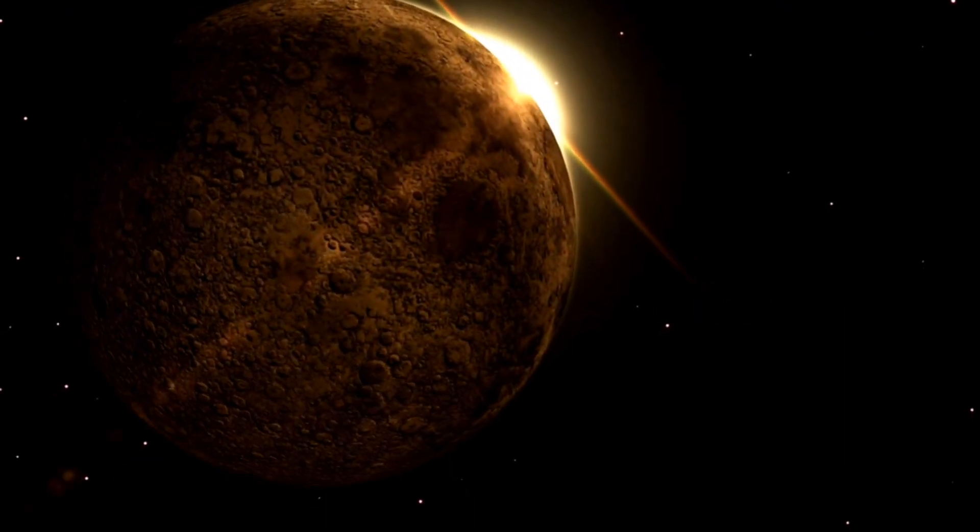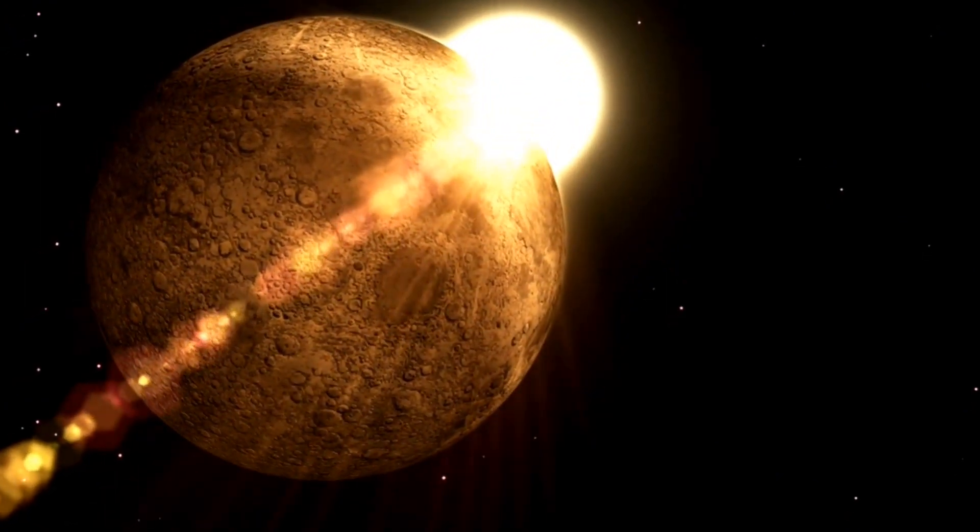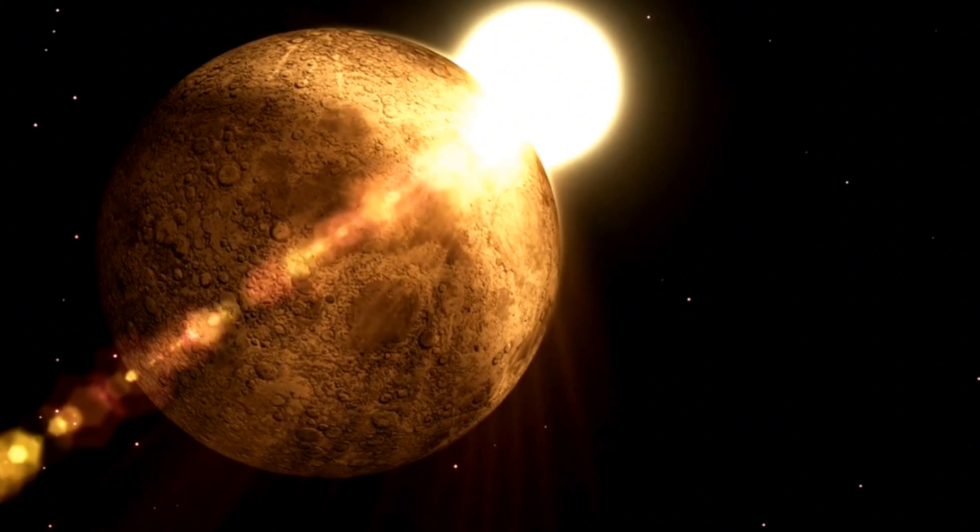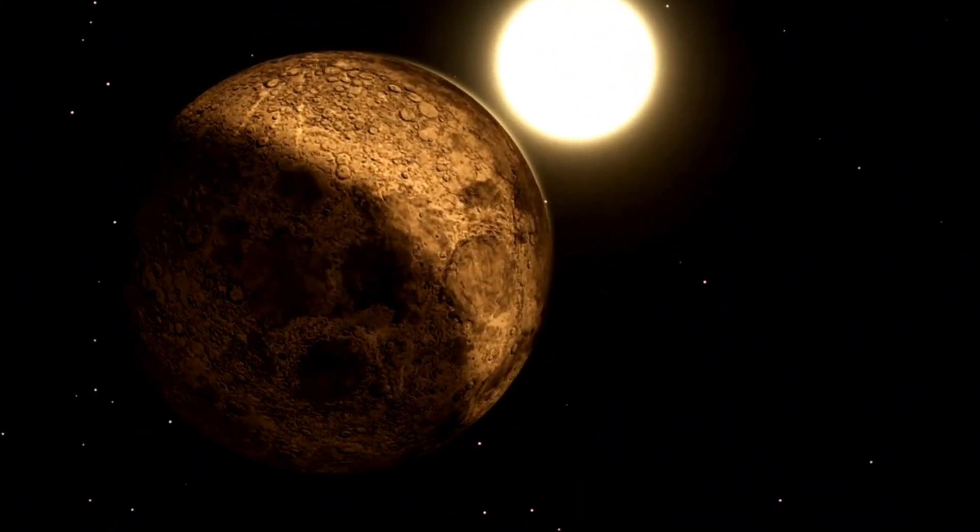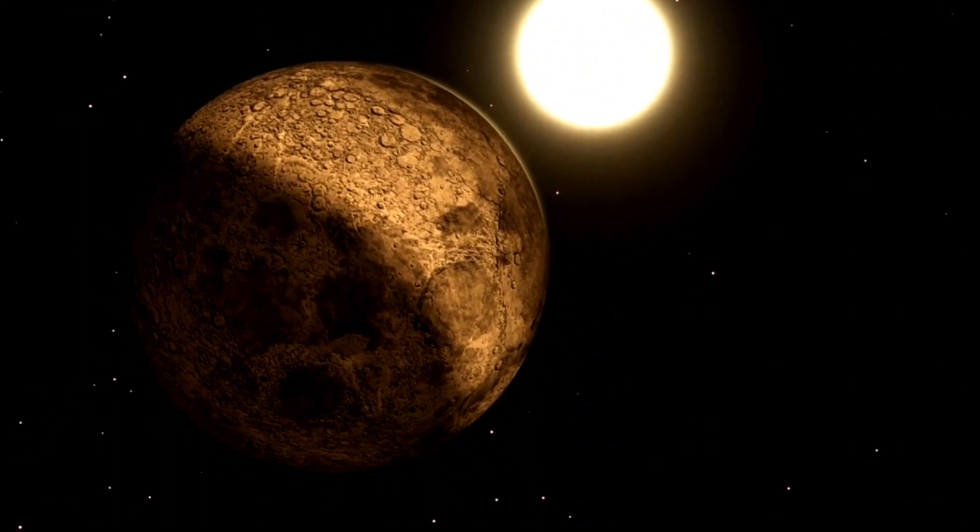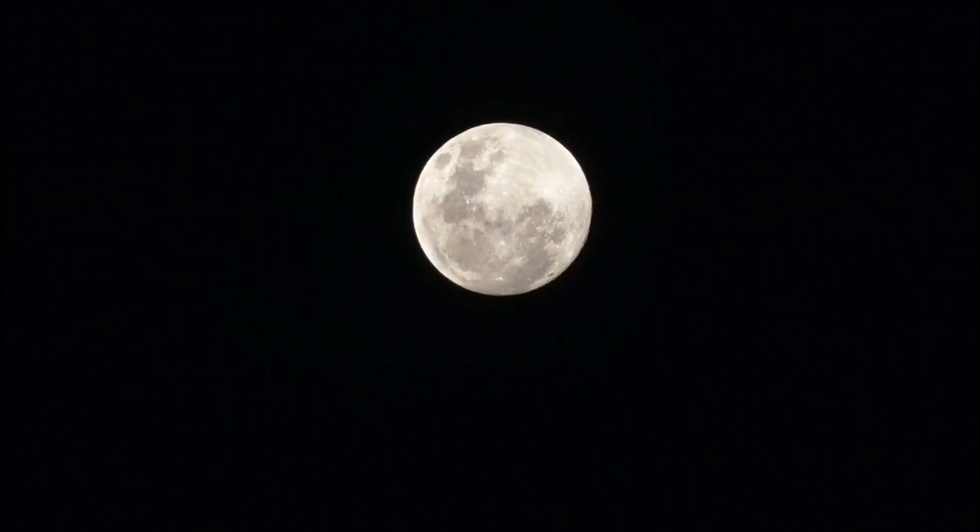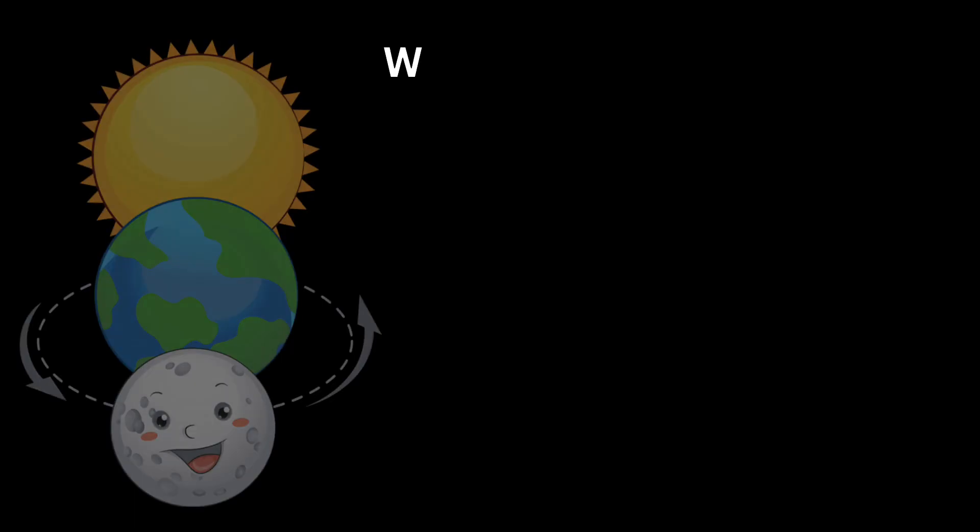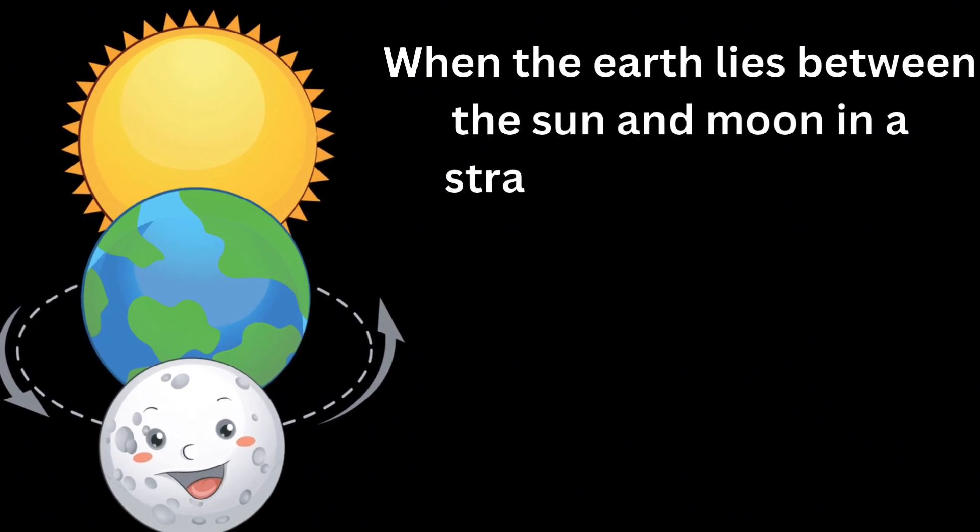During the course of revolution, when the Earth lies in between the Sun and the Moon in a straight line, the shadow of the Earth falls on the Moon. This phenomenon is called a lunar eclipse. A lunar eclipse occurs only on a full moon night when the Earth lies in between the Moon and the Sun in a straight line.